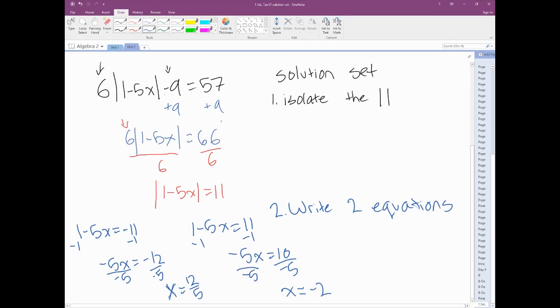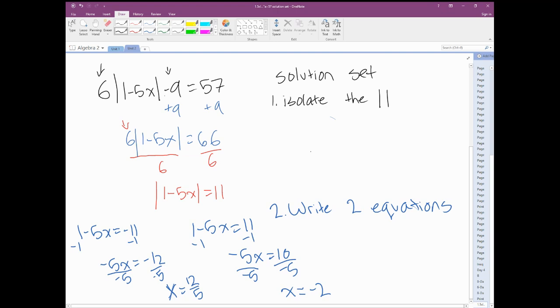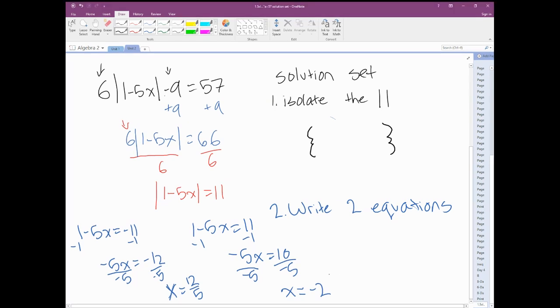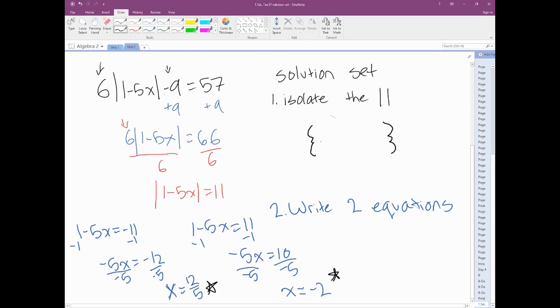Those are the two big steps: isolating the absolute value, then writing and solving the two equations. The solution we end up with, we're going to write it in these curly brackets. We always write from least to greatest, so we have negative 2 comma 12 over 5. This is how you would solve this problem.